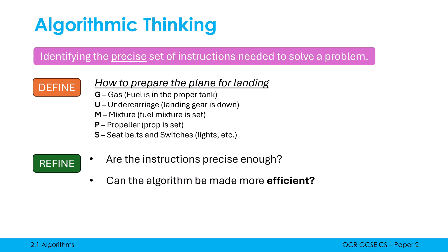We also apply algorithmic thinking to refine and improve algorithms, particularly when instructions aren't precise enough. The big goal for computer scientists is making algorithms more efficient. Efficiency is about maximizing what you have — speed is one aspect, meaning can we change instructions so the program goes faster. But memory is often forgotten: can we minimize the amount of memory being used? Shorter code takes up less memory. It'll be a common exam question in paper two to refine an algorithm to make it faster or use less memory.